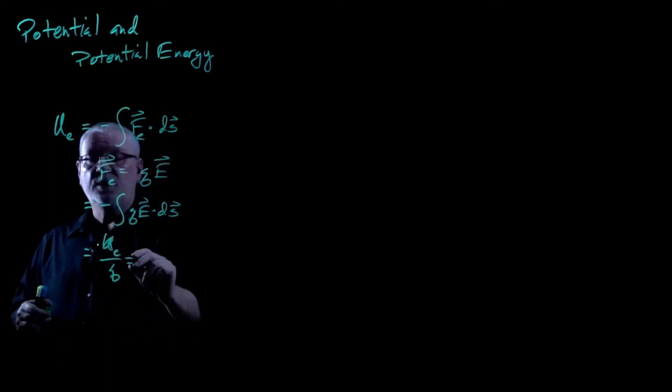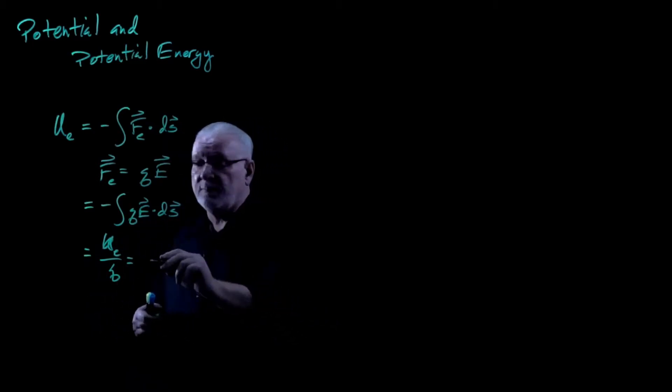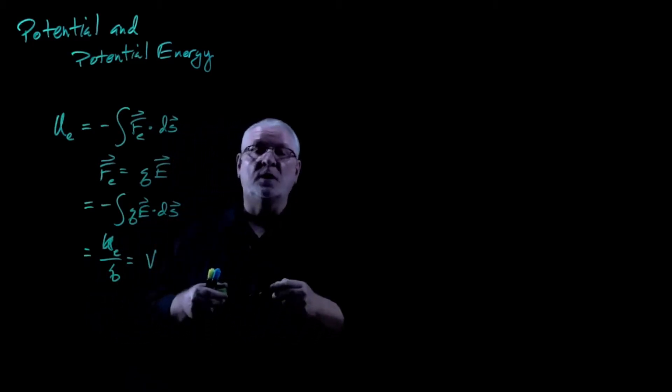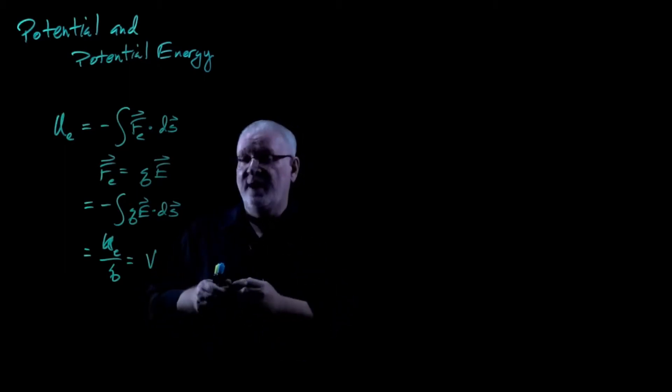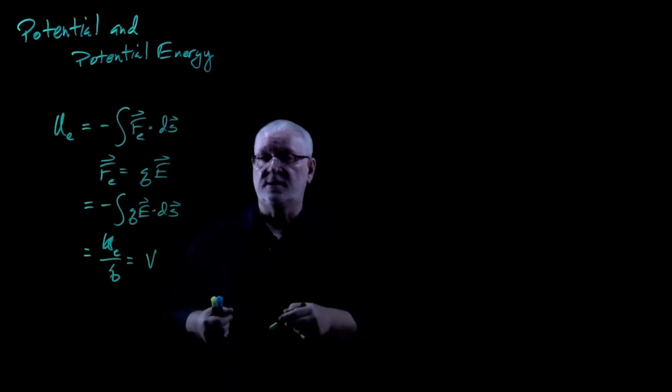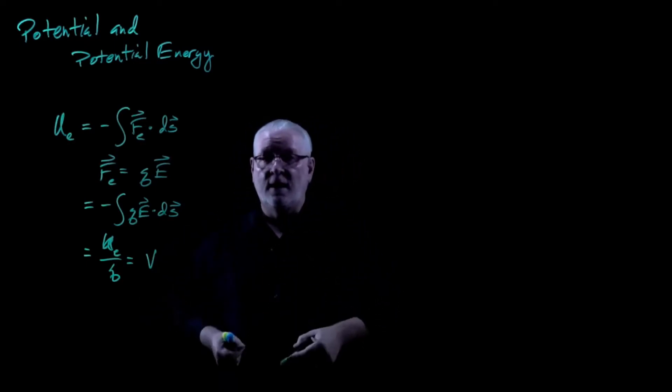That means this equals the potential energy U sub E divided by the second charge Q. And this is such an important quantity to us that we're going to give it a separate name. The variable for it is V, and we're going to call that the potential. So there it is, there's the electrical potential. It's the electrical potential energy, yet we're dividing out by the second charge.